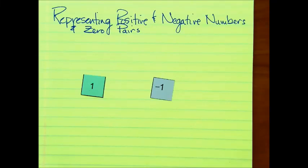Now I'm going to talk about representing signed numbers, or positive and negative numbers. I'll also talk a little bit about zero pairs, and then representing numbers numerous ways with positive and negative numbers.